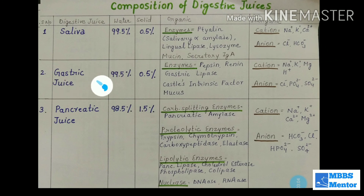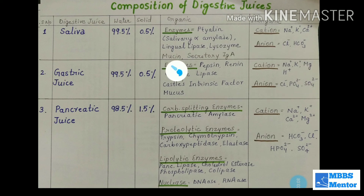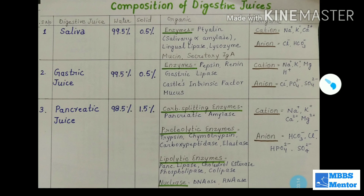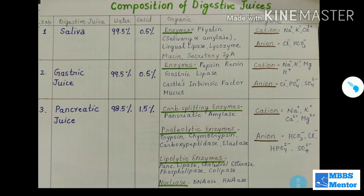Gastric juice is secreted by the stomach. Enzymes include pepsin, rennin, gastric lipase, Castle's intrinsic factor, and mucus. Cations: sodium, potassium, magnesium, and hydrogen. Anions: chloride, phosphate, and sulfate. Remember, gastric juice has high H+ because HCl ionizes into H+ and Cl−.